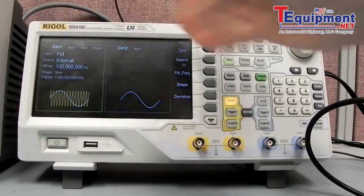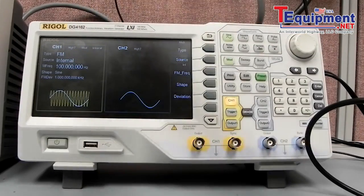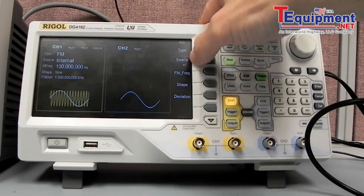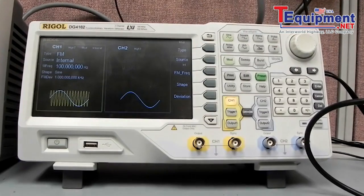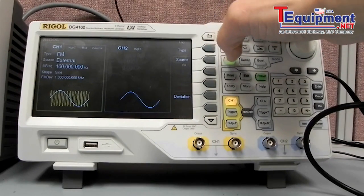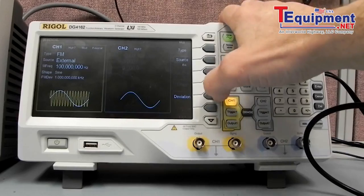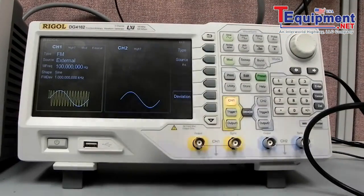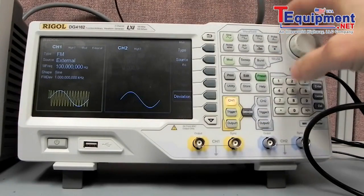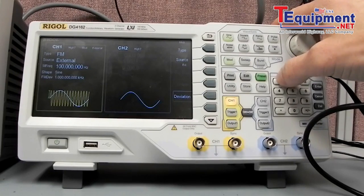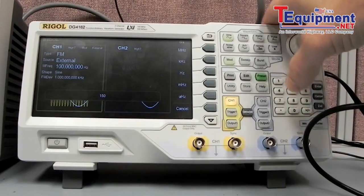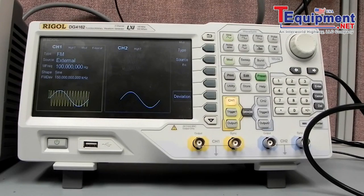So I've selected the FM, so the carrier frequency is going to modulate, and instead of using the source internal, we're going to have it connected to an external source. And then our deviation, or how far that carrier frequency is going to change. Here in the U.S., typically a radio station is 150 kHz or less, so we'll type in 150 kHz, and we're all set with the arbitrary waveform generator.